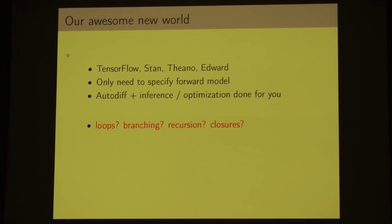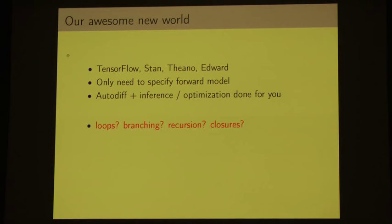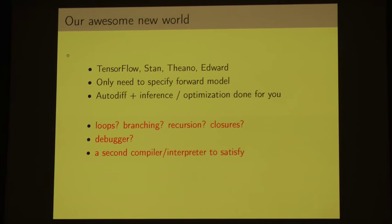For instance, if you want to do something like having loops with an adaptive stop condition, or if-statements, or using recursion or even closures in one of these frameworks, they're starting to add these hard-to-use versions of the primitives that we already have in high-level languages — things like cond or scan. We also lose transparent access to the debugger and have to interpret the indecipherable error messages of some new secondary compiler or interpreter.